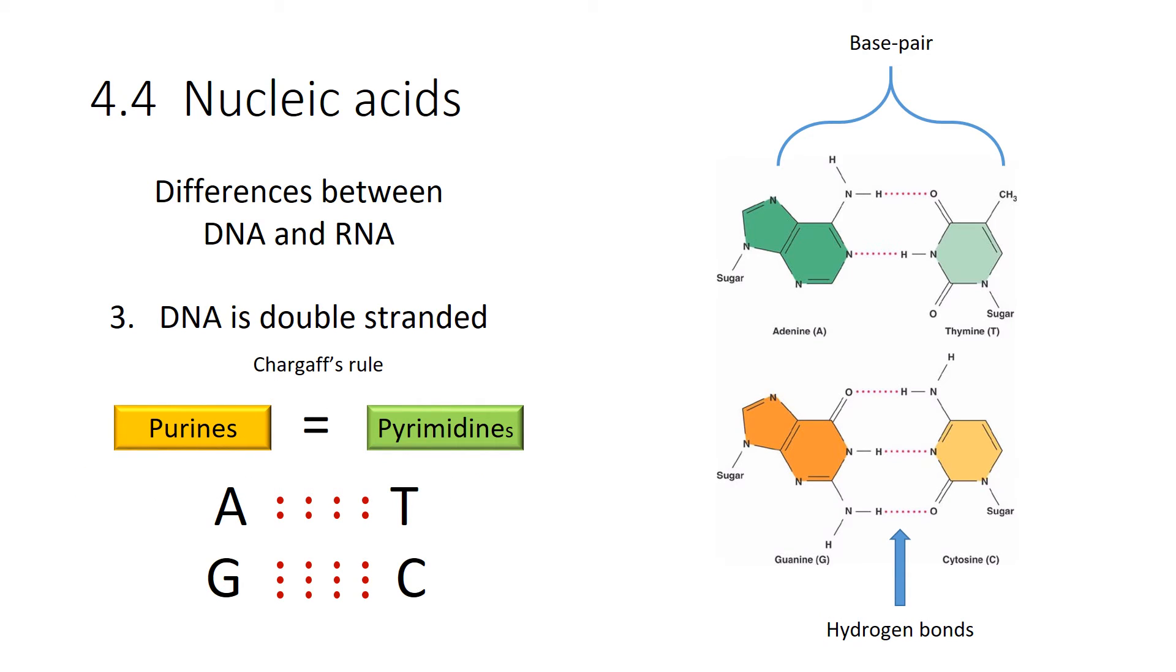There are two types of nitrogenous bases. One is called a purine. The other one is called a pyrimidine. Now, this thing called Chargaff's Rule, it means that pyrimidines are always equal to the number of purines. And here's the difference. A and G, which are adenine and guanine, are purines. And look at the molecules on the right side of your screen.